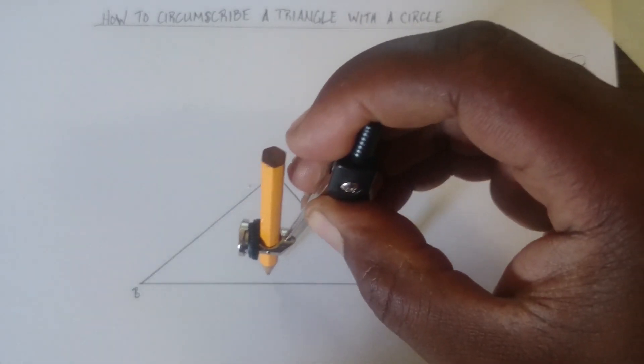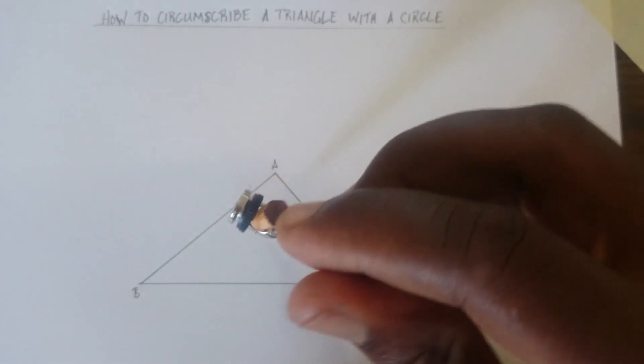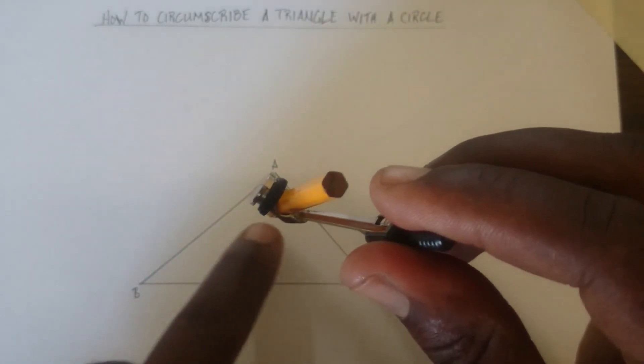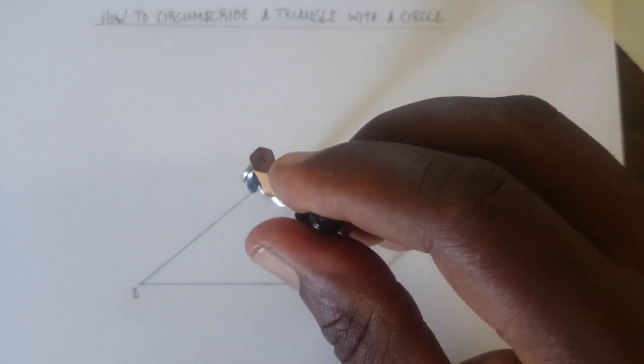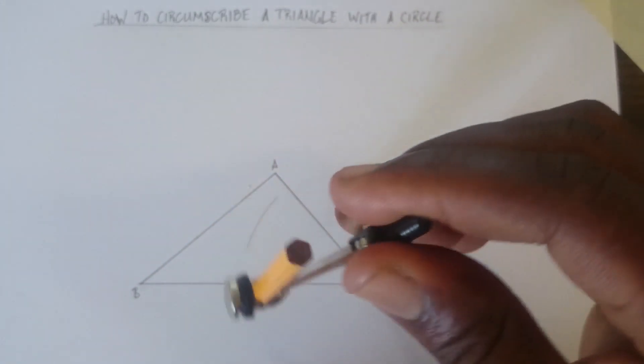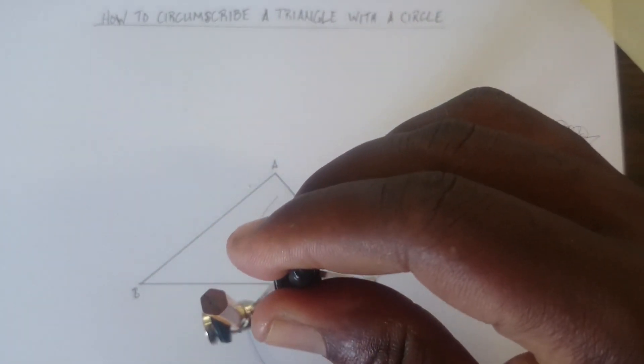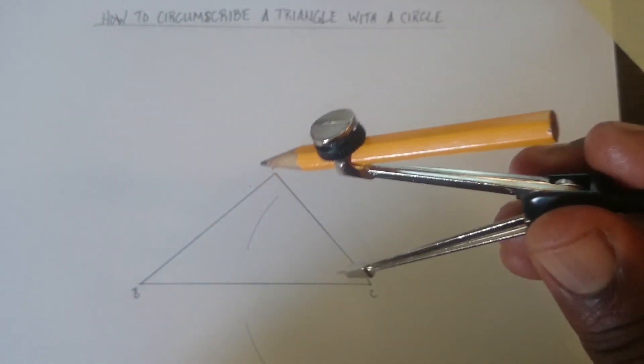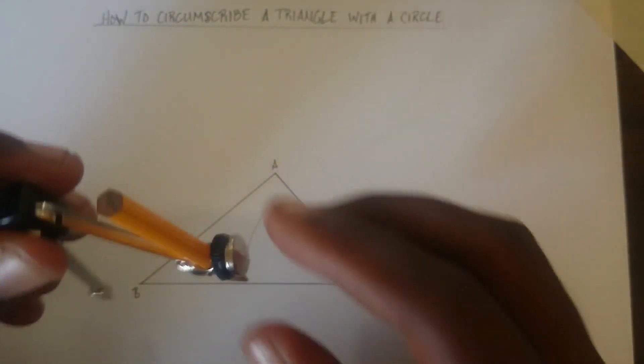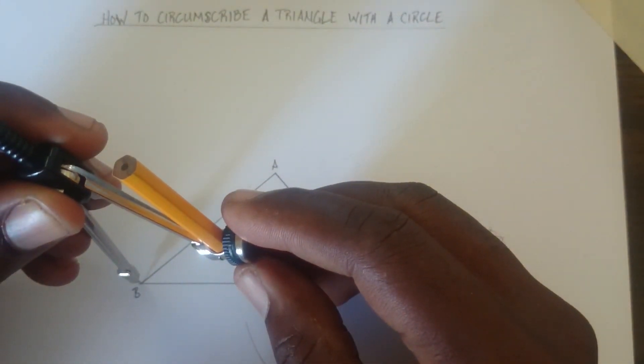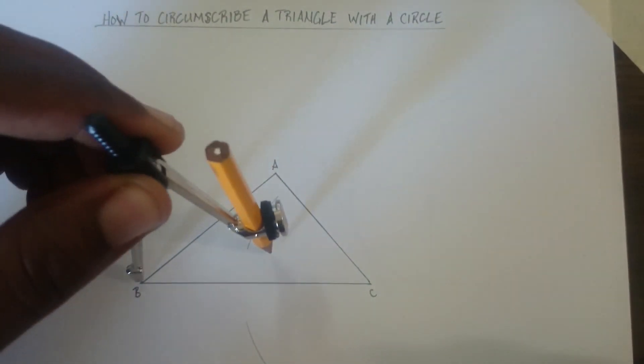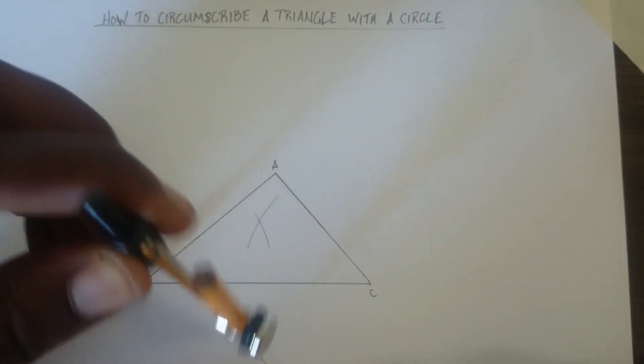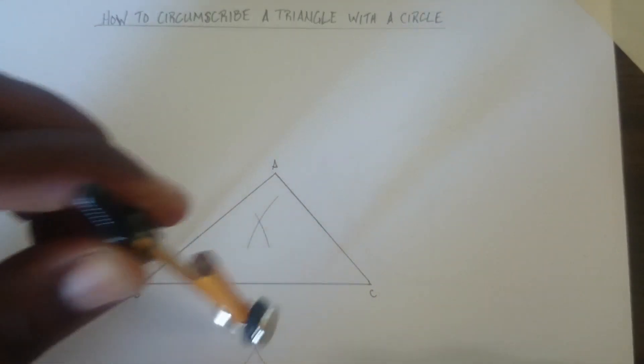You open it to a little more than half, and you strike arcs above the line and below the line. You take your compass, make sure it doesn't move, and you put it at B. Strike another arc above and below the line.